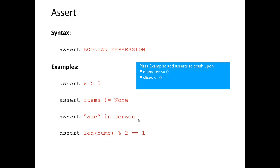Some examples: 'assert x > 0' — if x is actually greater than zero, nothing happens; if x is negative or zero, it crashes. 'assert items != None' verifies that items actually have data. 'assert age in person' checks that a key exists in a dictionary. 'assert len(nums) % 2 == 1' checks that the length of a list is an odd number.